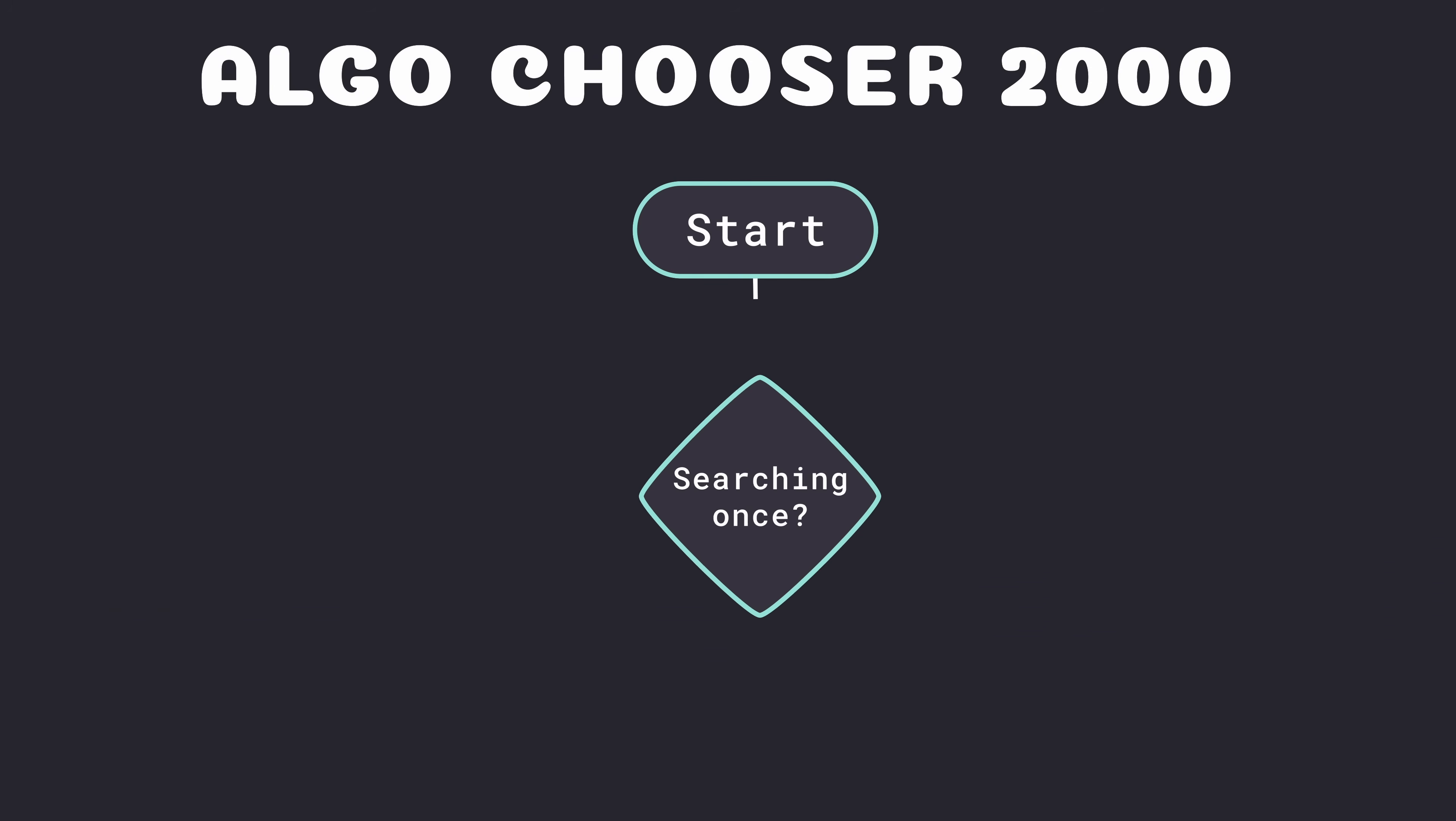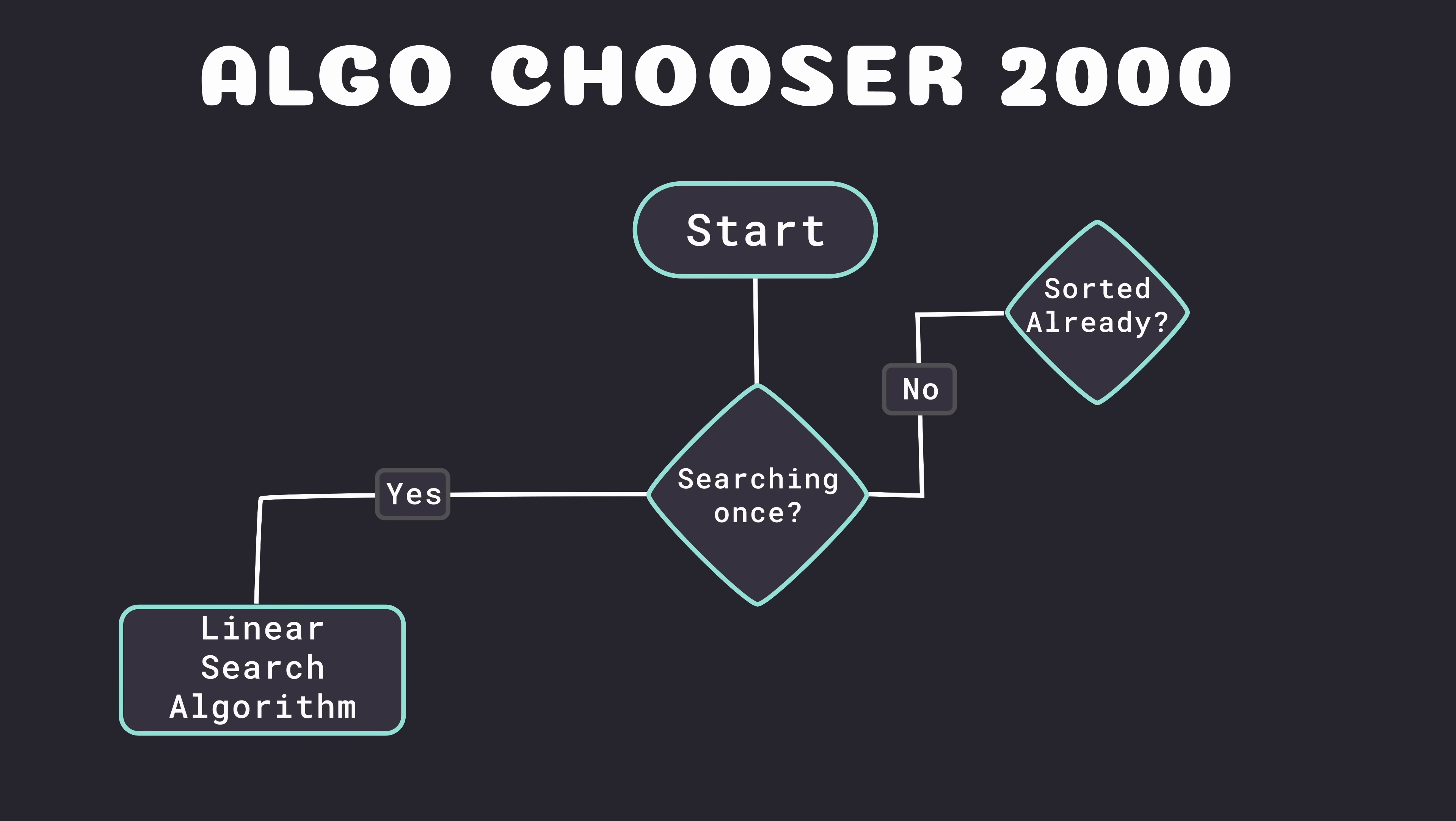Because of this, if you plan on only searching your data once, then linear search is the correct choice. However, if the data is intended to be searched multiple times, then it's worthwhile spending the time to sort it, enabling the much more efficient binary search algorithm. One approach of doing this is to sort your data once. Then, when new data comes in, rather than resorting your data set, you instead insert it into the correct place, making use of binary search to determine where that is.